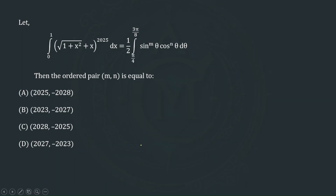Let us discuss the concepts one by one. Here it says: let this integral be equal to this integral, then the ordered pair (m, n) is equal to what. So we have to compare these two integrals — we don't have to actually evaluate either of them. So how are we going to compare them?